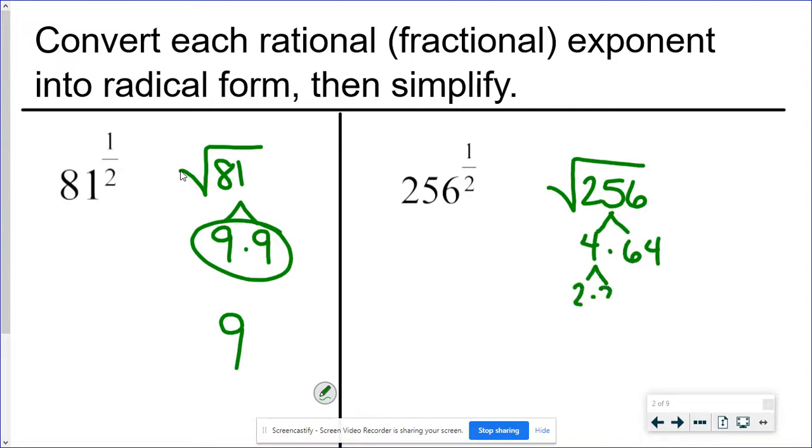Four times 64. Well, the four can be a two and a two. And the 64, ooh, instead of breaking it down by twos, let's make that an eight and an eight. So I've got a pair of twos, they break out. A pair of eights, they break out. And two times eight is 16, because remember I said 256 is a perfect square. 16 times 16 is 256.